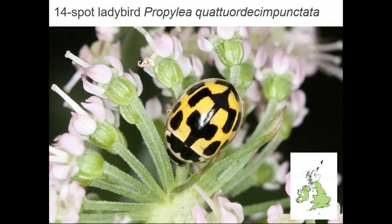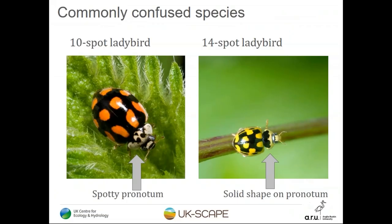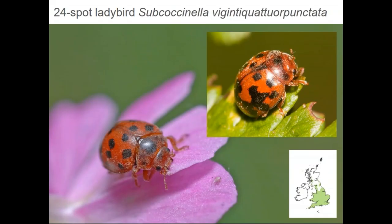The 14-spot ladybird is a beautiful aphid-feeding species with very square spots, though sometimes those spots can fuse and it may be confused with the ten-spot. Look at the marking behind the head — it's very different from the speckled ten-spot pronotum. I think of it as looking like a crown or a clenched fist coloured in: a solid, wiggly pattern, whereas the ten-spot has a more speckly M-shape on its pronotum.